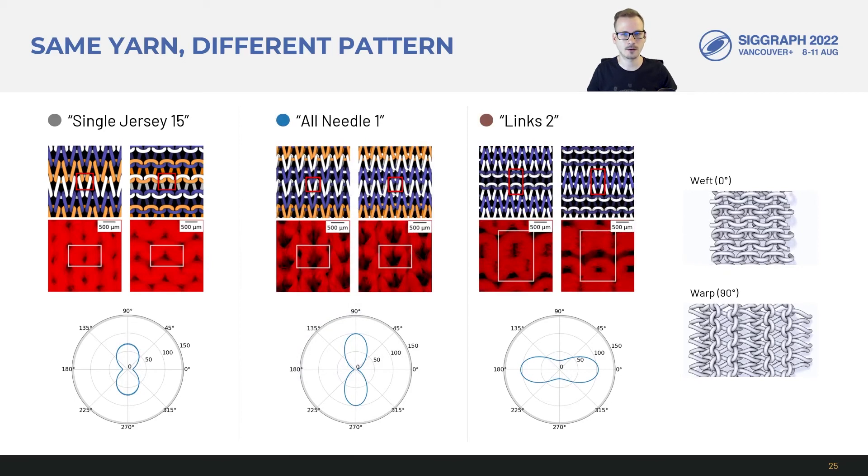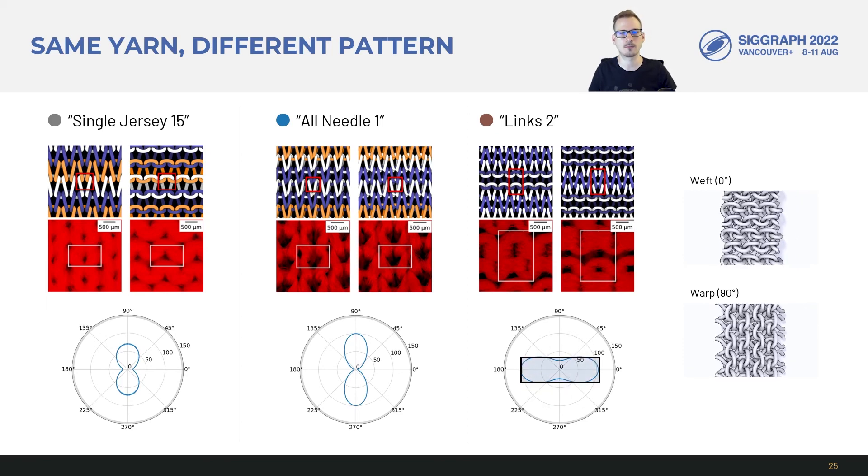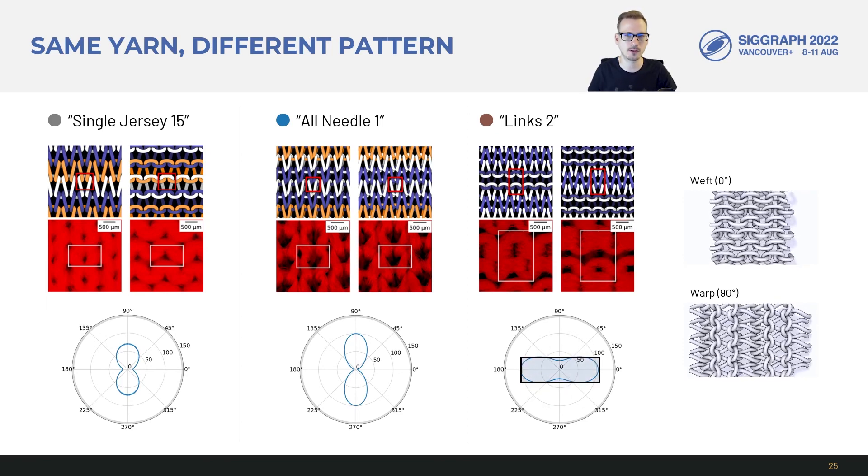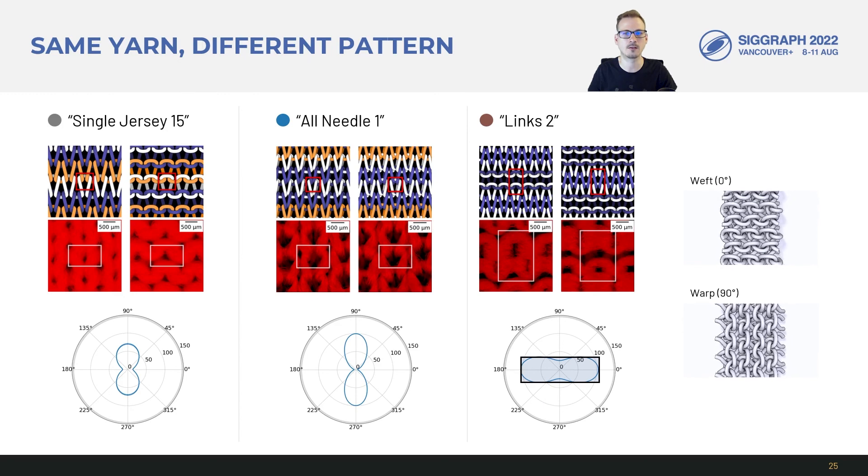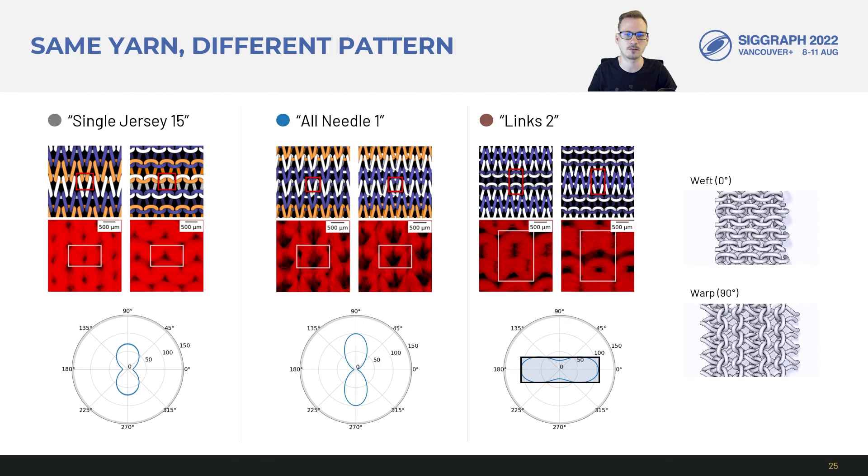Still using the same polyester yarn this links fabric has a pattern topology that leads to a very unusual flipped anisotropic stiffness. It is more stiff along 0 degrees and compliant along 90 degrees. So just varying the yarn pattern alone has an interestingly complex material space.